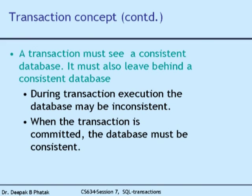Consider a simple consistency example: transferring 50 rupees from my account to a friend's account. Originally my balance was 1000 rupees and my friend's balance was 500 rupees. After executing this transaction, my balance should be 950 and my friend's balance should be 550 — that is the consistent end state. But during execution, there will be a moment when my balance shows 950 but my friend's balance still shows 500.